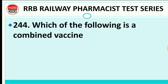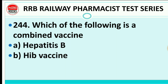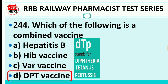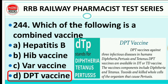Question 244: Which of the following is a combined vaccine? Hepatitis B, HIV, VAR vaccine, or DPT vaccine? The right answer is DPT vaccine. DPT stands for diphtheria, tetanus, and pertussis. DPT vaccine protects against three infectious diseases. It is available as DT or TD vaccine and is one of the combination vaccines. Combined vaccine yahi hai — DPT vaccine, jisko DTP bhi kaha jata hai.